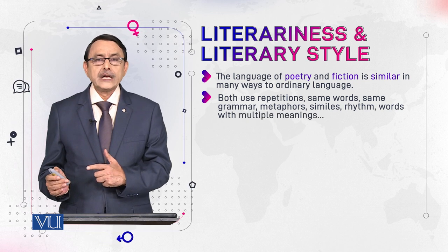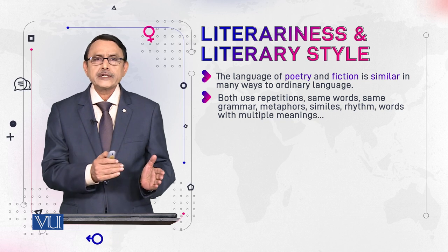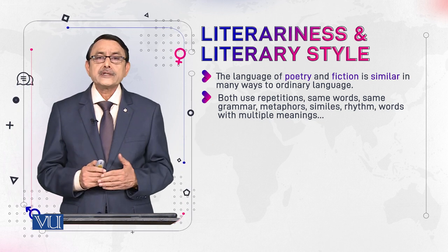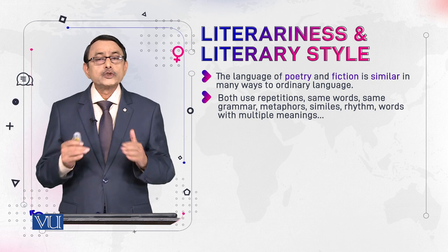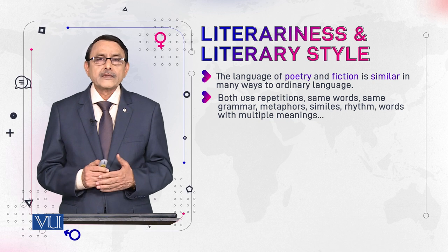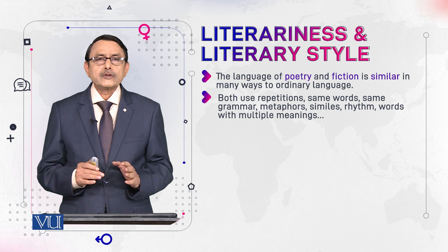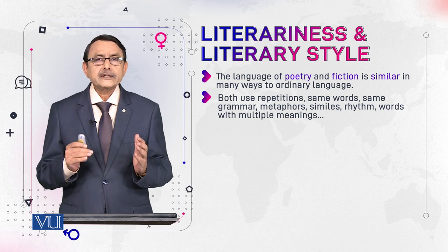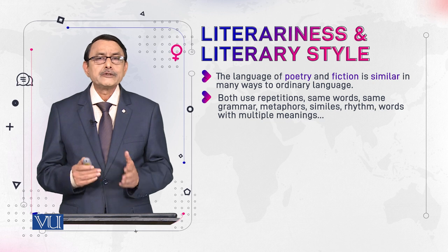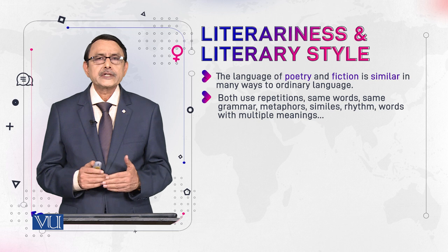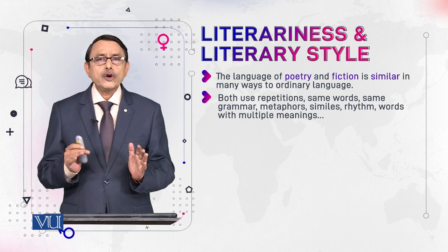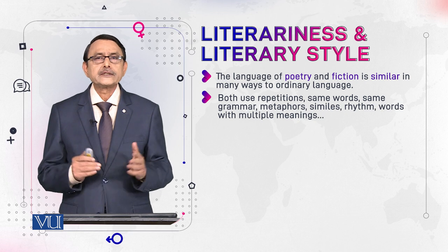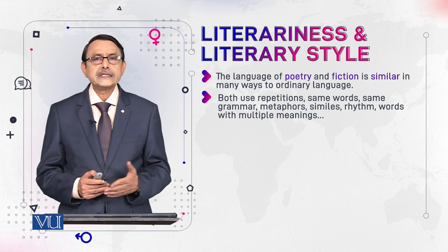Both ordinary language and literary language — the language of poetry and fiction — are in many ways the same. In both we have repetitions; we use the same words. You have seen two paragraphs from Mark Twain where all the words were very common, but their use by a writer was leaving a certain effect on us. We want to know what specific technique a writer uses that makes ordinary language become literary language. Both languages have repetitions, use the same words, same grammar, same sentence structure, metaphors, similes, and rhythm.